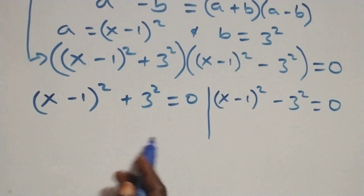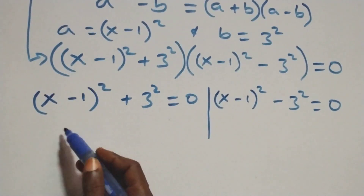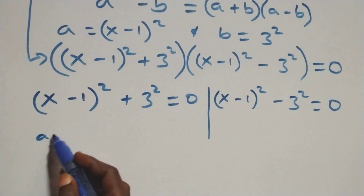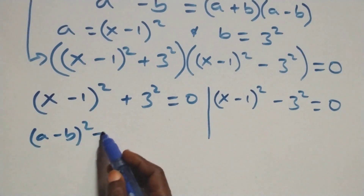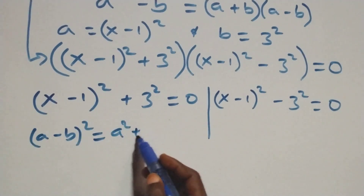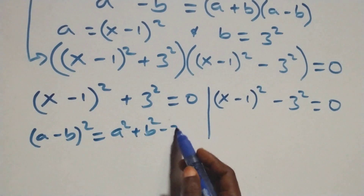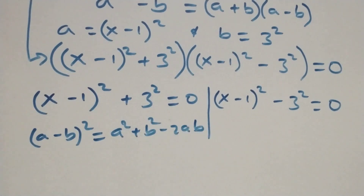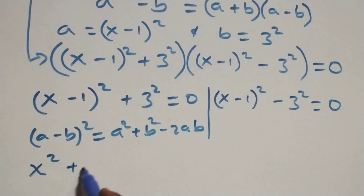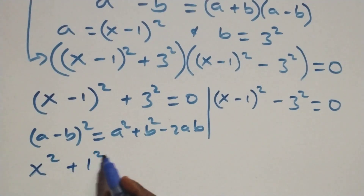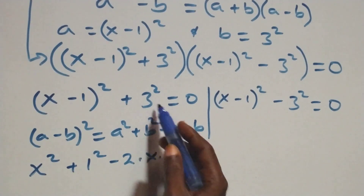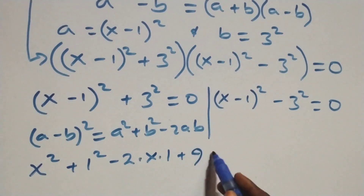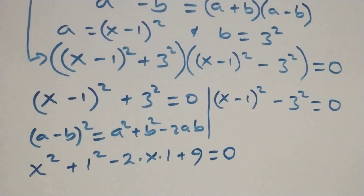Solving Case 1, we expand (x minus 1)² using the identity (a minus b)² equals a² plus b² minus 2ab. This gives x² plus 1 minus 2x, then plus 3 squared, which is 9, all equal to 0.